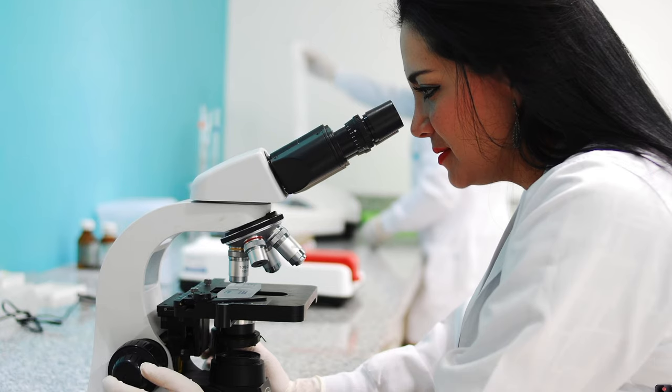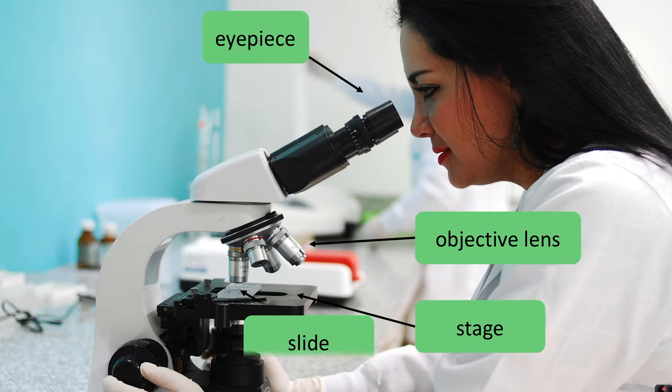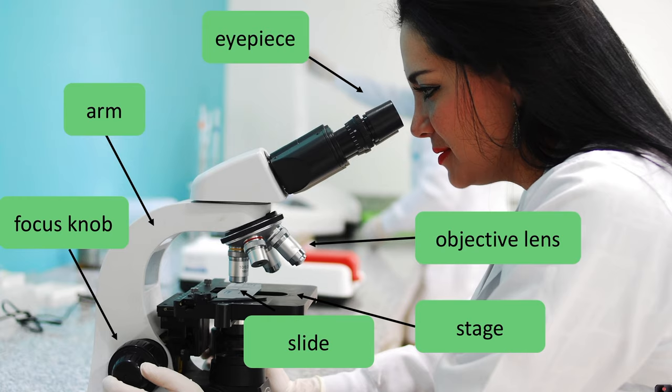The parts of the microscope that we need to be able to name are the eyepiece which is where you view the image, the objective lens, the stage upon which you put your prepared slide, the focus knob or the focus wheel and there'll often be two of those one coarse focus and one fine focus, and finally the arm with which you carry the microscope.